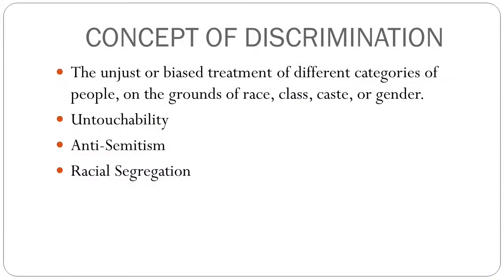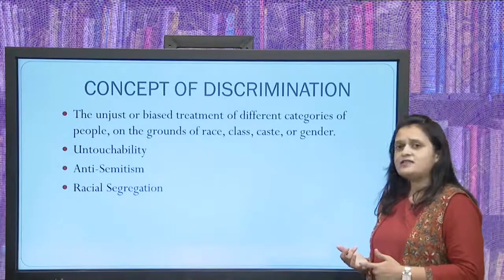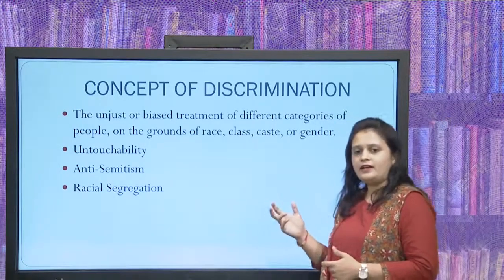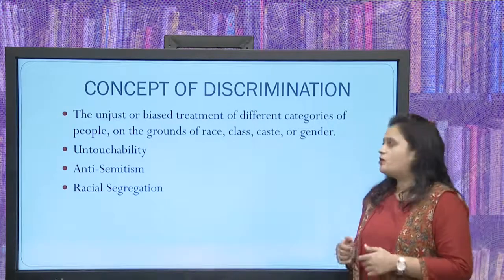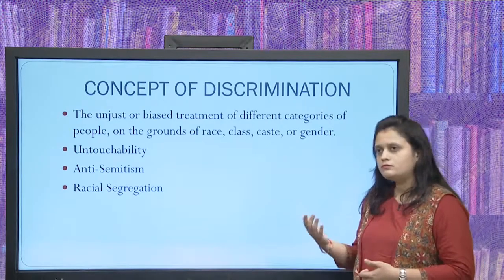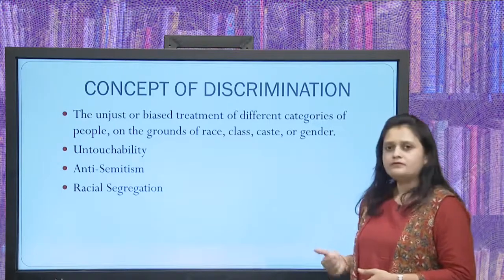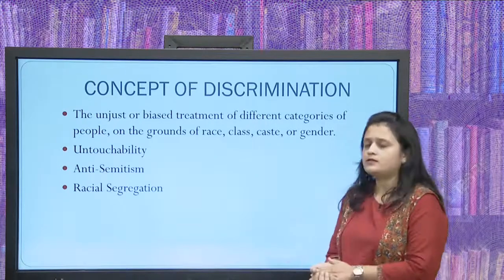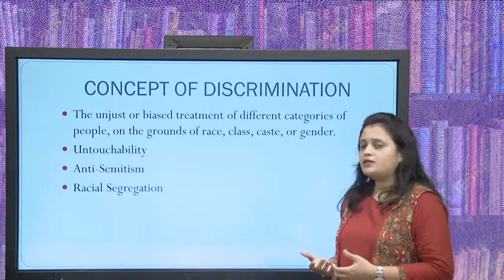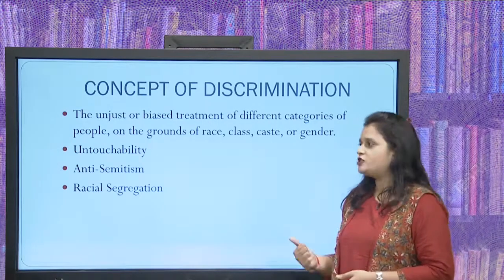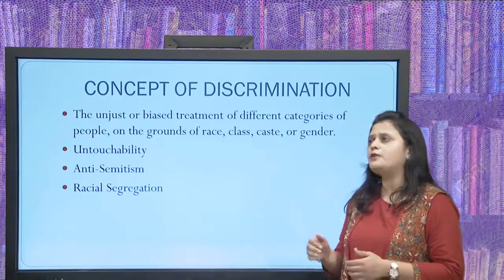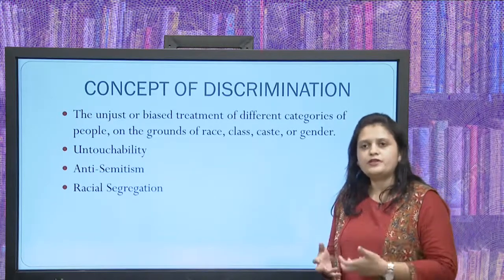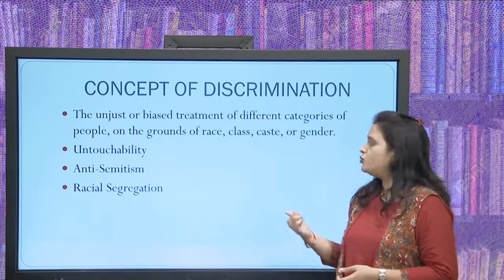Before we come to the core of The Bluest Eye, it is very important to understand the concept of discrimination. The unjust or biased treatment of different categories of people on the basis of race, class, caste, or gender is called discrimination. The concept of untouchability in India — where Dalits, the scheduled castes, were considered untouchable — goes beyond physical separation; it produces an averse mental state in the people who suffer from it.